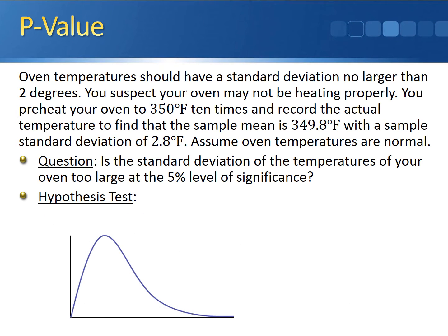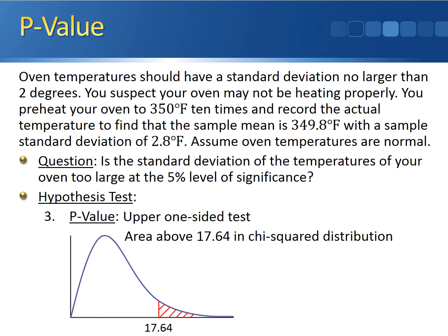We have the test statistic, so now we can calculate the p-value. This is an upper one-sided test because we have the greater than sign in the alternative hypothesis. As a result, the p-value is going to be the area above 17.64 in the chi-squared distribution. Since we're using the chi-squared distribution table, we can't actually come up with an exact p-value directly from the table. Using Excel, we can calculate the exact p-value of 0.0396. We'll go into greater detail about how you can get this exact p-value in class.